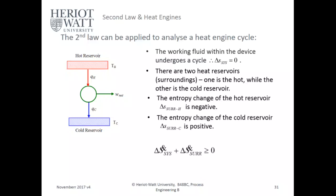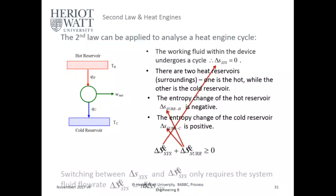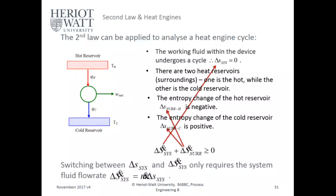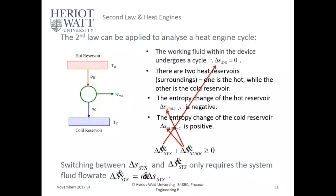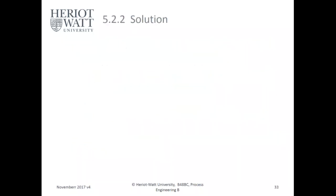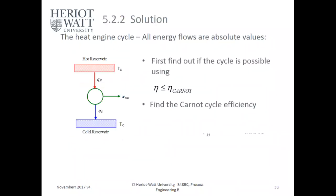Delta S of the system plus delta S of the surroundings is greater than or equal to zero. For a complete cycle, the system entropy change is zero, so the total entropy change is determined purely by the entropy changes of the surroundings.